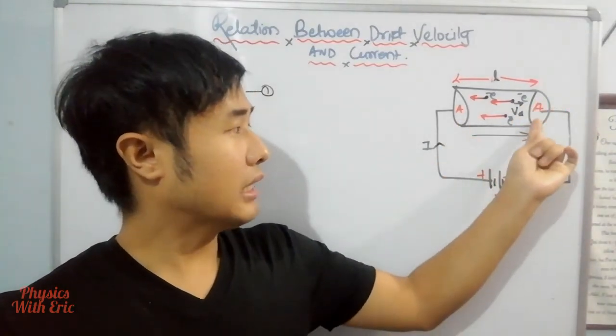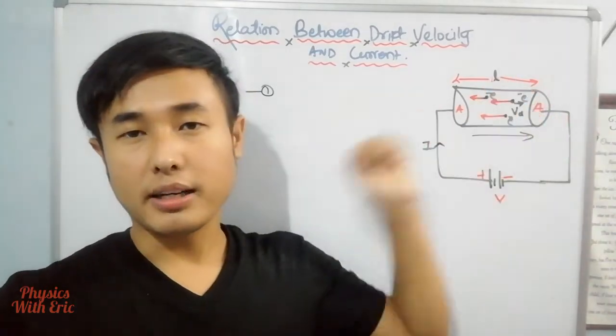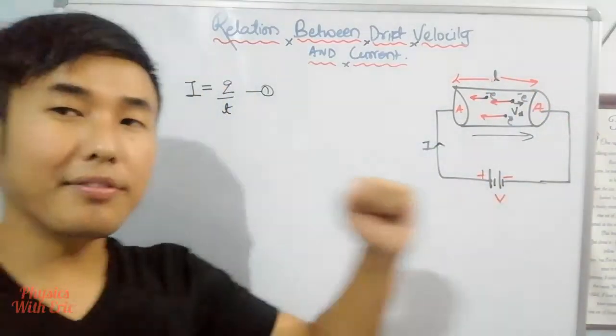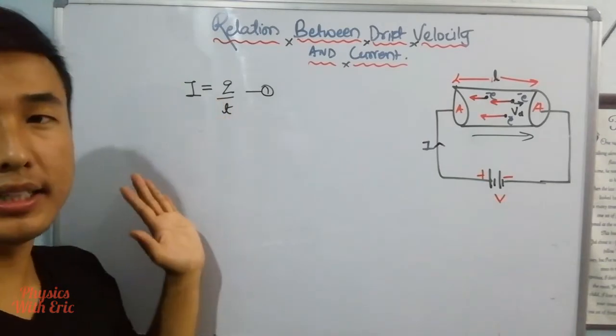So I have a conductor here. Let's start with the definition of current: I equals Q by t.